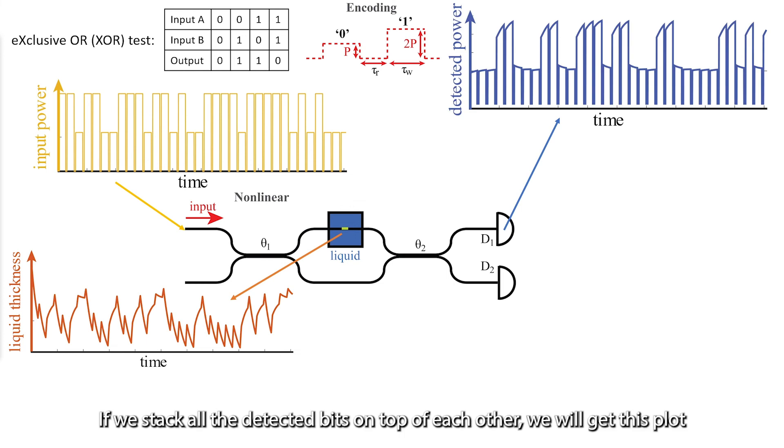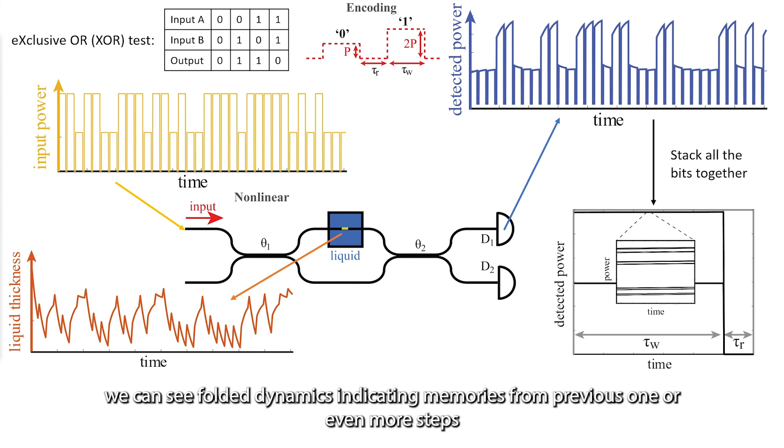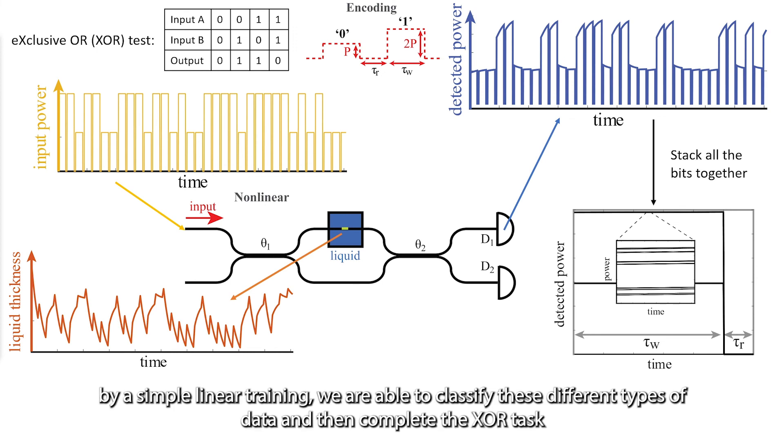If we stack all the detected bits on top of each other, we will get this plot. It seems just showing 0s and 1s, but if we zoom in, we can see folded dynamics indicating memories from previous one or even more steps. By a simple linear training, we are able to classify these different types of data and then complete the XOR task.